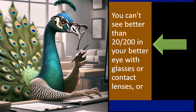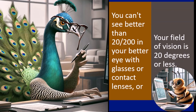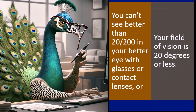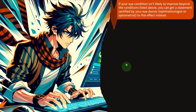Obviously we have two eyes and one eye could be better than the other, so you can get fairly technical about the exact condition required to qualify as blind for the higher standard deduction. The other criterion is that your field of vision is 20 degrees or less.